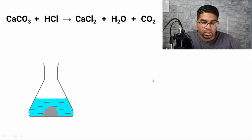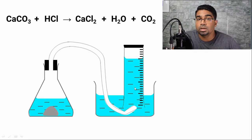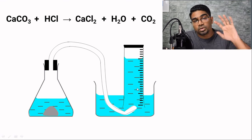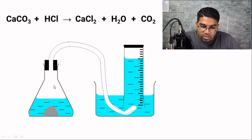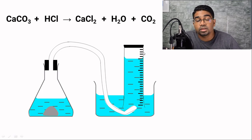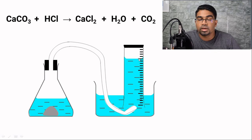Another setup to measure the volume of gas being produced is the water displacement method. Whatever gas is produced will flow through the delivery tube into this vessel, which can either be a measuring cylinder or a burette. You fill up this container with water and invert it into a basin of water. As more and more gas is produced, the gas will push the water out of the burette or measuring cylinder, and the volume of gas can be measured using the scale on the measuring cylinder or burette.